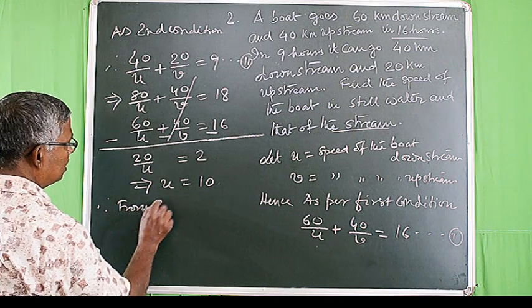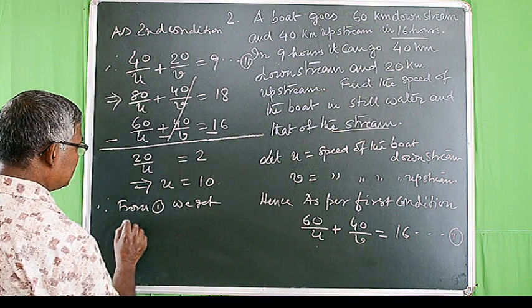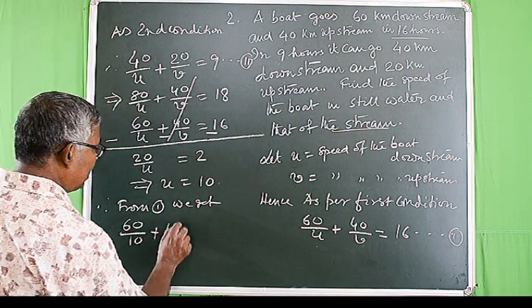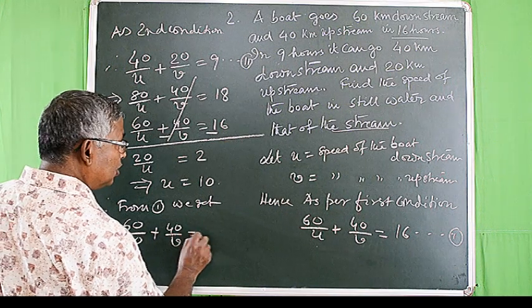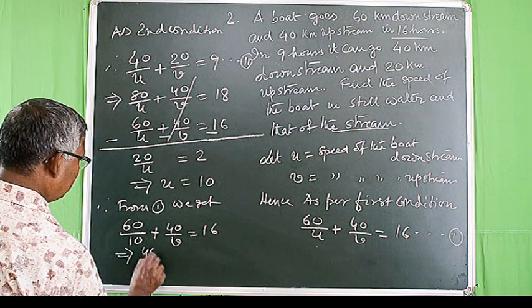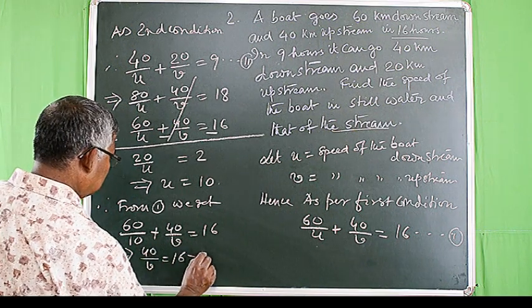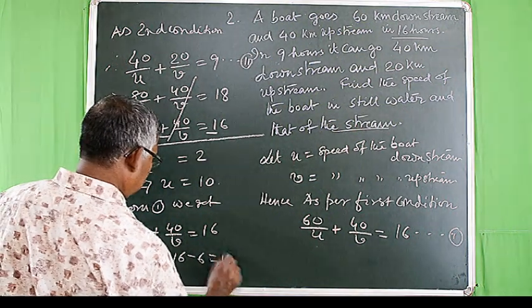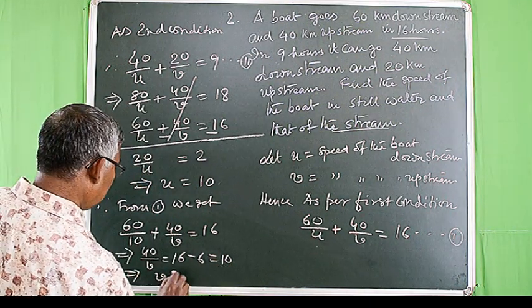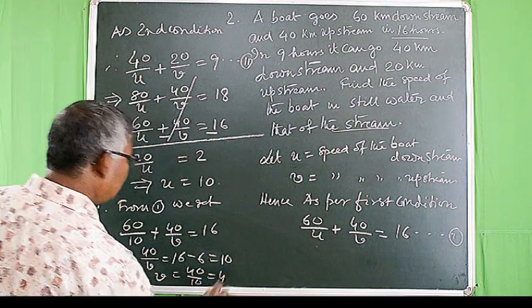From equation 1 we get 60/10 + 40/v = 16, which implies 40/v = 16 - 6 = 10, which implies v = 40/10 = 4.